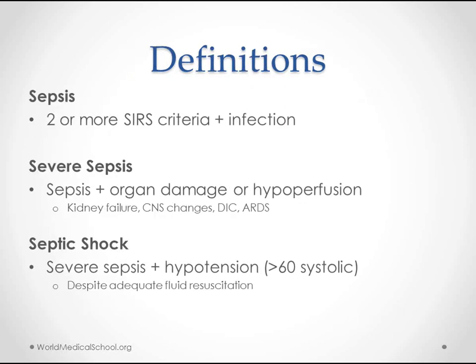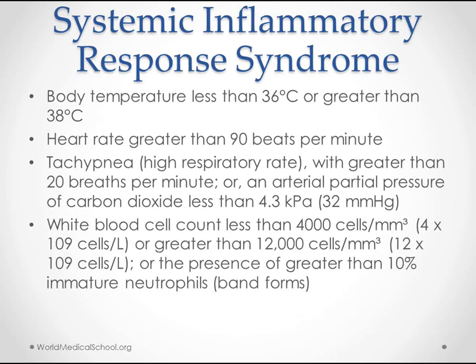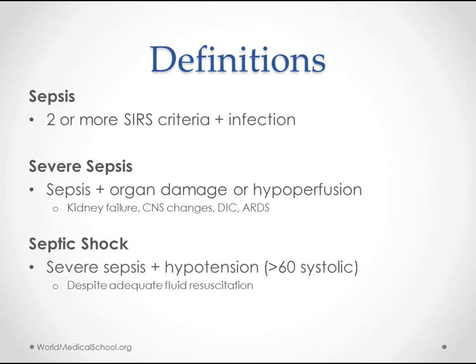The next definition is sepsis. Sepsis is basically SIRS caused by infection. In order to make this diagnosis of sepsis, you have to have two or more of the SIRS criteria — body temperature, heart rate, respiratory rate, or white blood cell count — plus some source of infection. Usually this diagnosis can be made as easily as if there's an open wound, or if you have a line that's been in for a long time you can almost assume that's sepsis, because you have a foreign body in there — but especially if you have a positive culture. That's a good enough reason to start an antibiotic, which we'll talk about in a second.